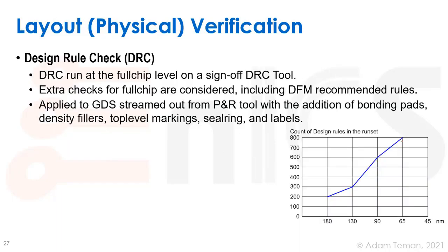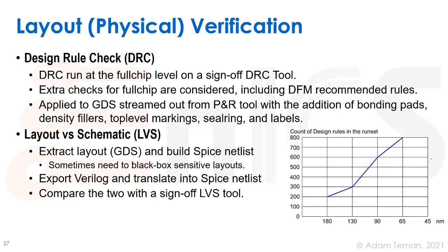The next stage during sign-off is layout or physical verification. First is Design Rule Check, or DRC — we run a full-chip DRC by taking our GDS and putting it into an accurate DRC tool that has a rule deck defining all the foundry's DRC rules. There are also additional checks such as DFM, DFY, and checks for tape-out according to the package maker. Density fill is created with the DRC tool, and antenna checks are also run there. This gets very complex with newer technologies — you can see the rise in the number of rules going from 180nm to 65nm, and it's gotten much worse since.